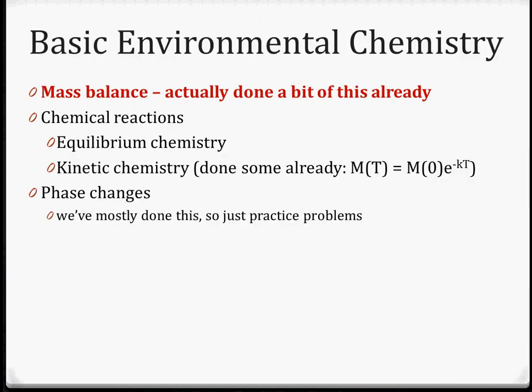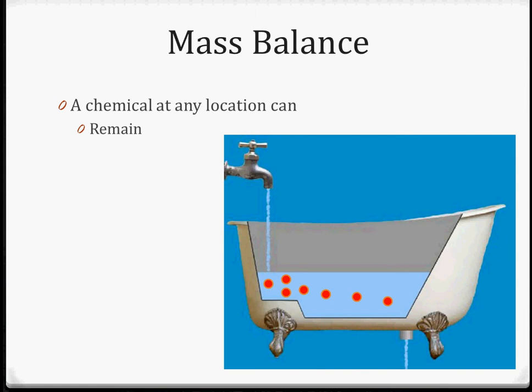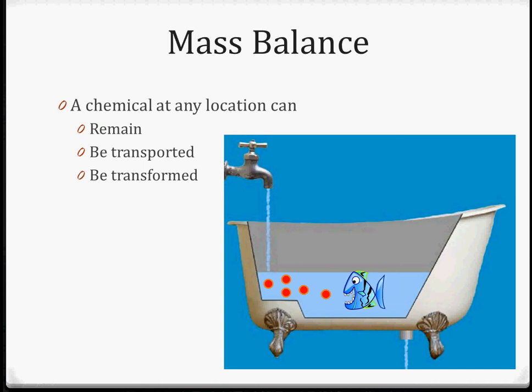First we're going to talk about mass balance. Mass balance uses the idea that a chemical in any location — in this example, a bathtub with little orange chemicals — can stay in the bathtub, be transported (leaving through the drain), or be transformed. A fish could come along and take it up, either eating it or absorbing it, or it could change phases, vaporizing or turning into a solid — essentially disappearing from the bathtub but being transformed into another state.